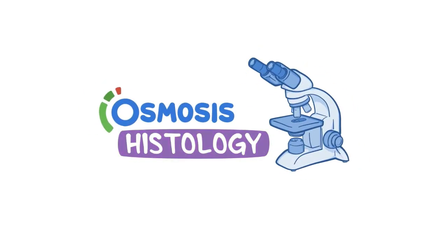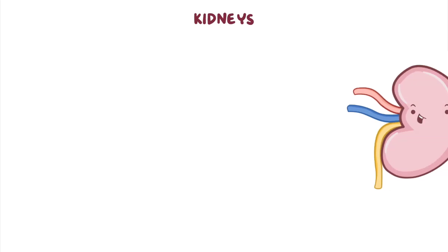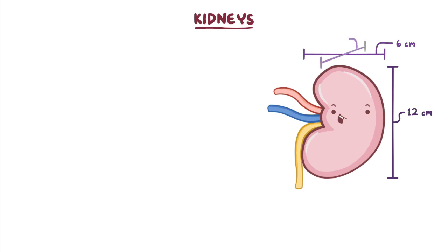Now, let's get a closer look. Kidneys are large, bean-shaped organs that are approximately 12 cm long, 6 cm wide, and 3 cm thick in adults.